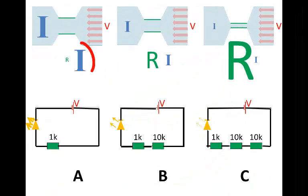In the same way, in circuit A, the current strength is higher. It's easier for the electric charge to move around the circuit. In circuit C, it's more difficult for the electric charge to move around the circuit. So the current strength is lower.